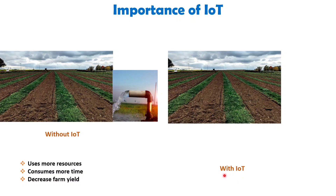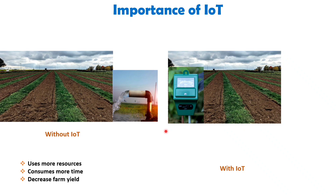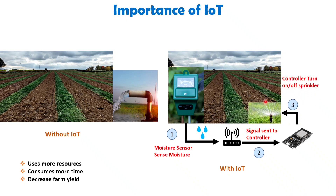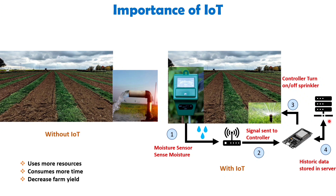Now envision the same agriculture field equipped with IoT technology. Here you will notice a soil moisture sensor placed in the field. This sensor measures the moisture content of the soil and sends the signal to a gateway node, which further transmits the data to an IoT-enabled controller. Based on the program within the controller, it takes the necessary action to turn on or off the sprinklers according to the moisture level. Additionally, this system can store historical data such as moisture content at different time intervals, water consumption by the system, and electricity usage. With this data, farmers can effectively manage future yields.